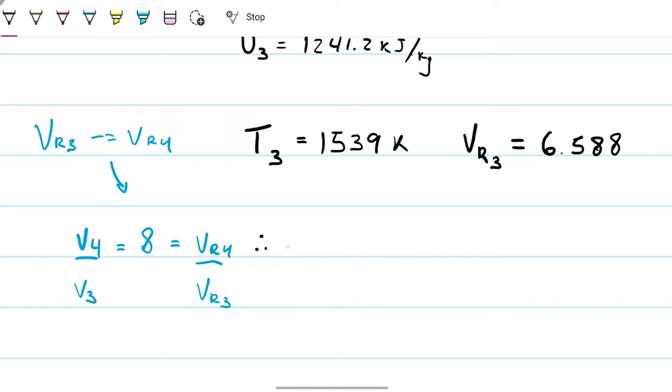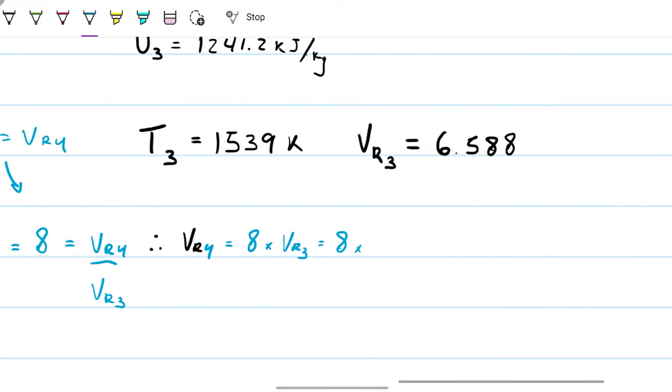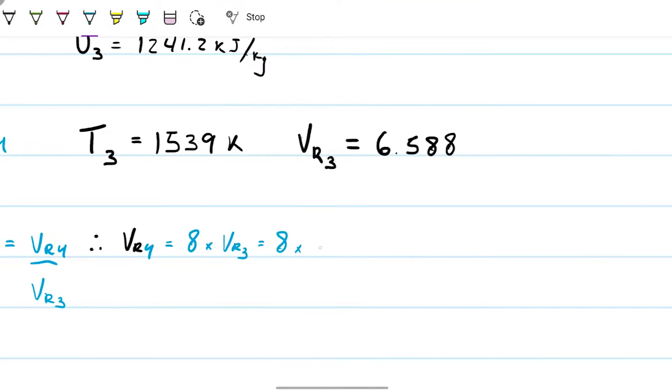If it were not an isentropic process, this would not be true. So if this is the case, this means that my VR₄ will just be my VR₃ times 8. And we happen to know VR₃ is the value we just got, the 6.588. Therefore, my VR₄ equals 52.7.